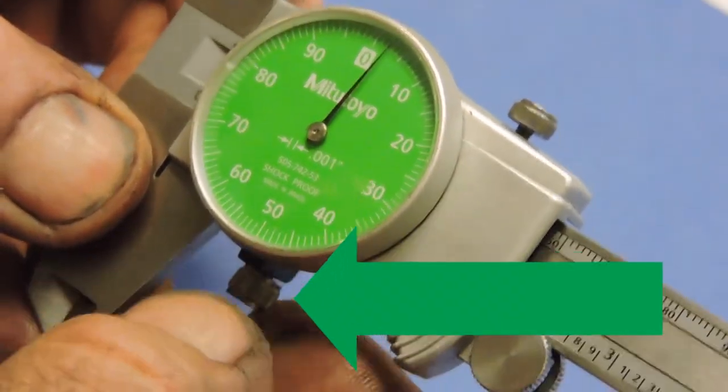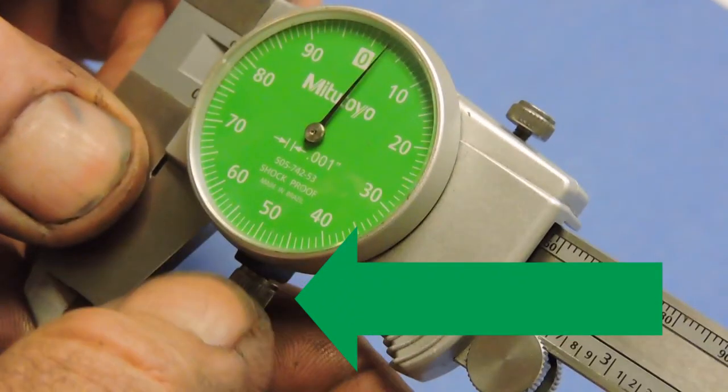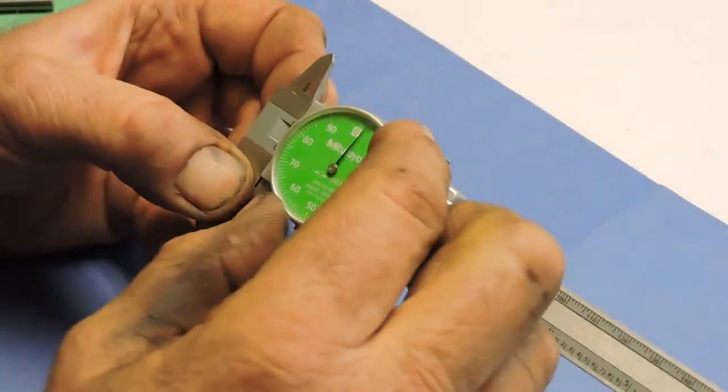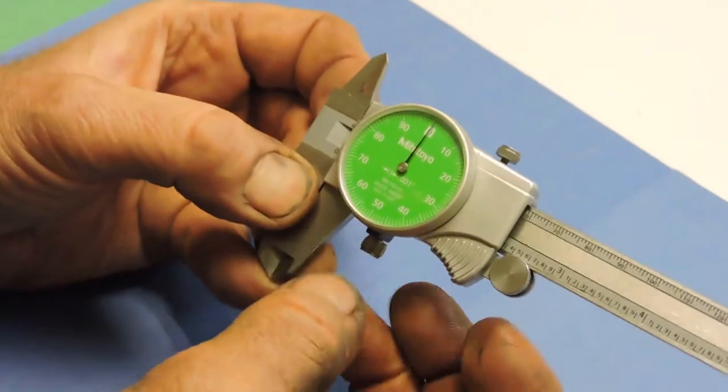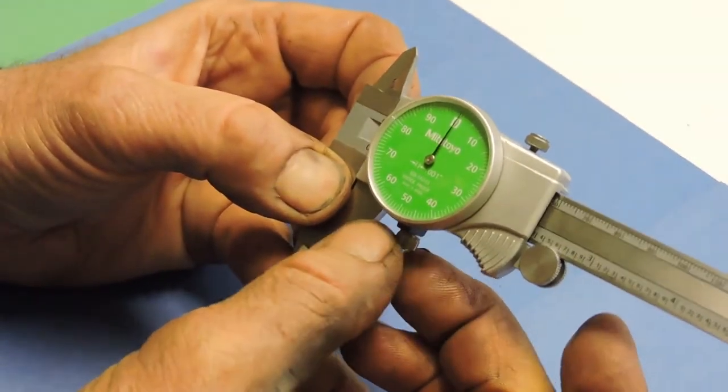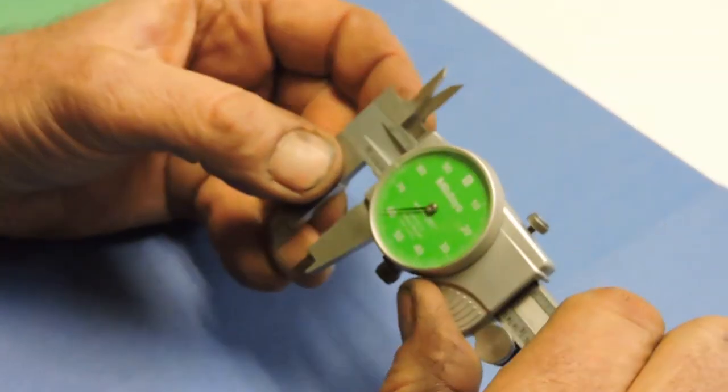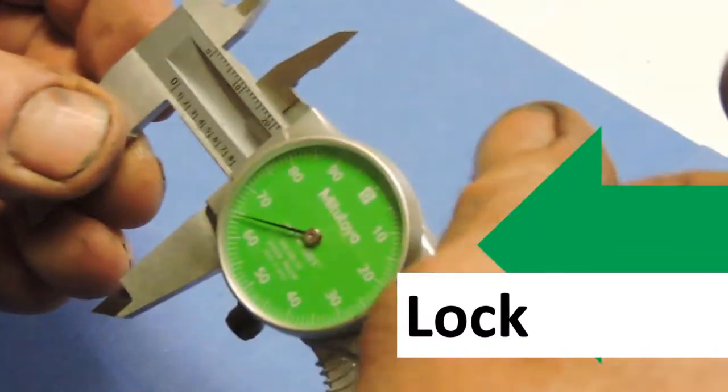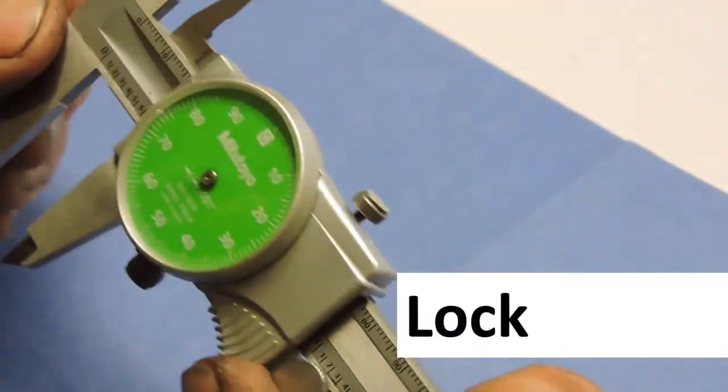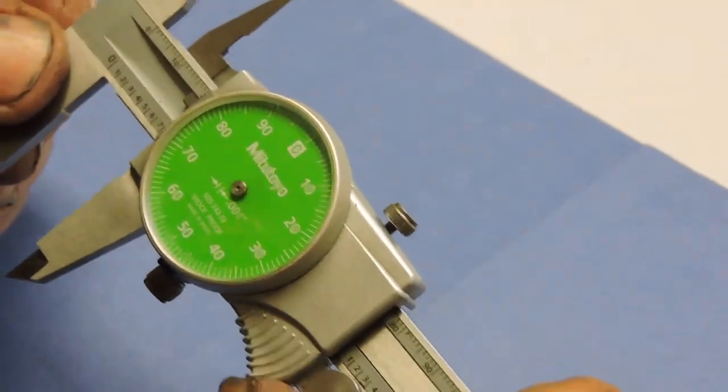Almost all dial calipers have a little thumb screw down here, and you can turn the scale to make sure it reads zero, tighten the screw, and you're ready to begin. You also have a lock on the slide up here, so you always want to make sure that's loose when you're traversing the jaws.